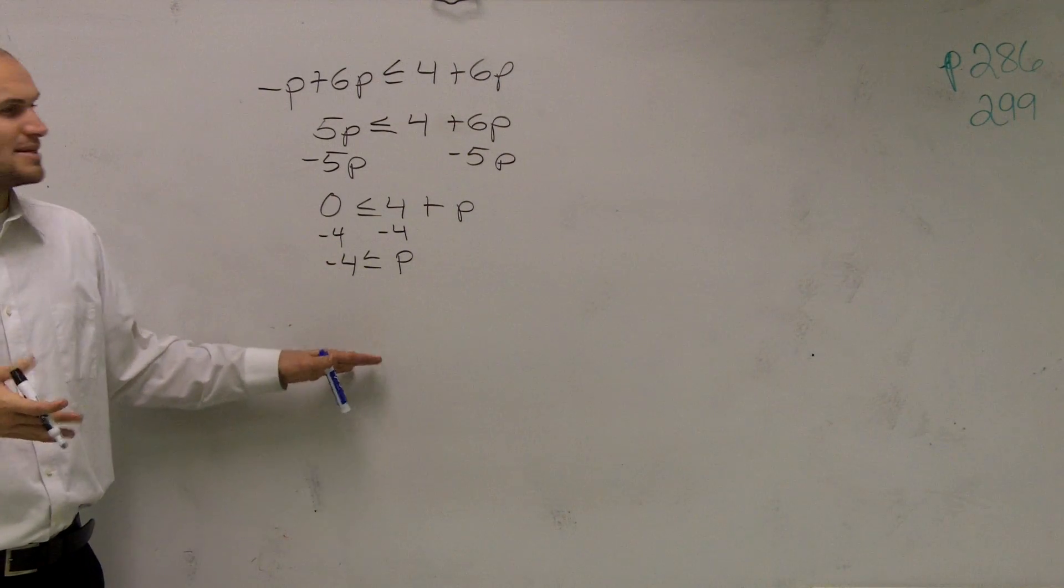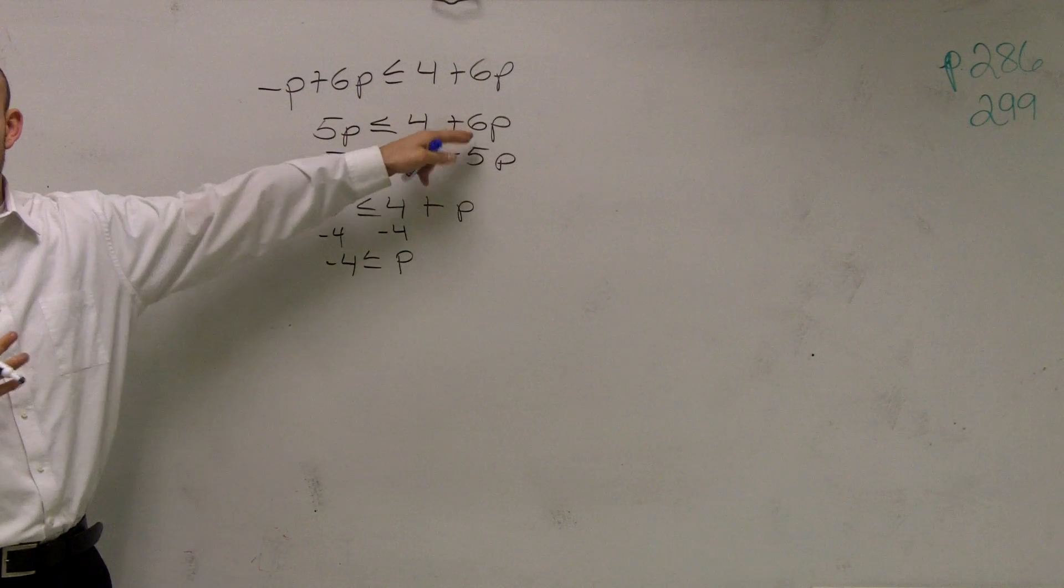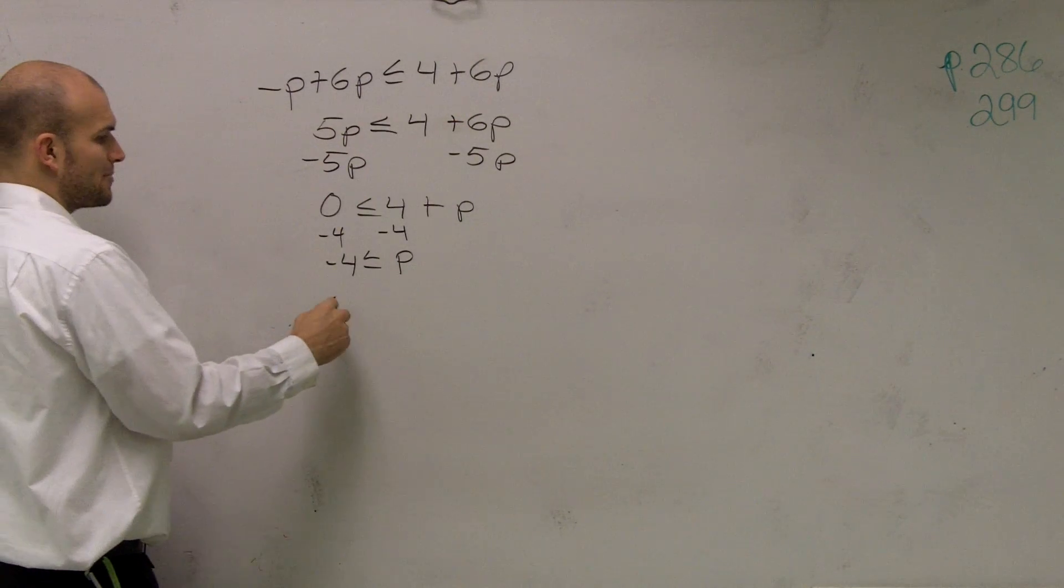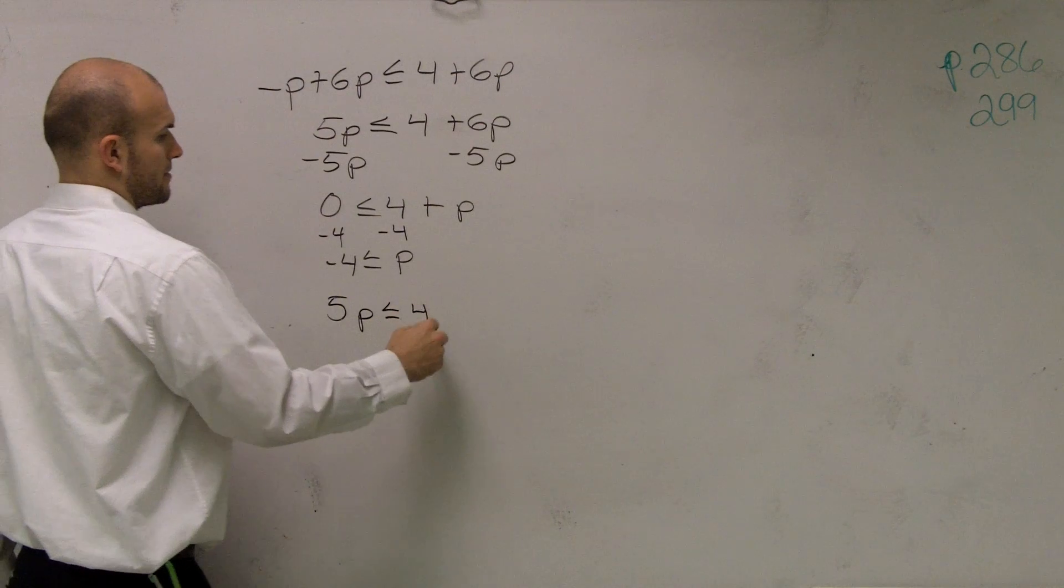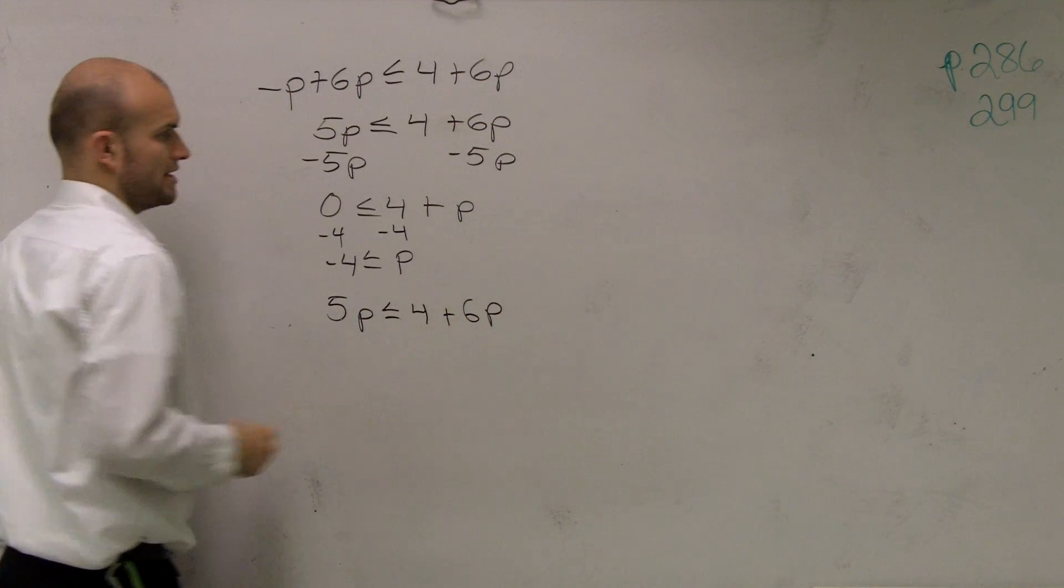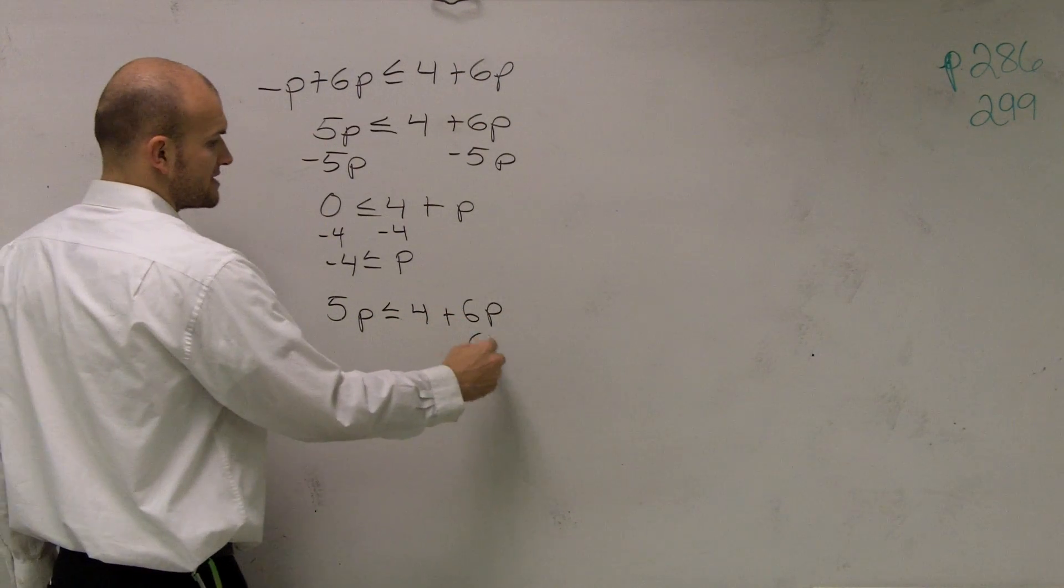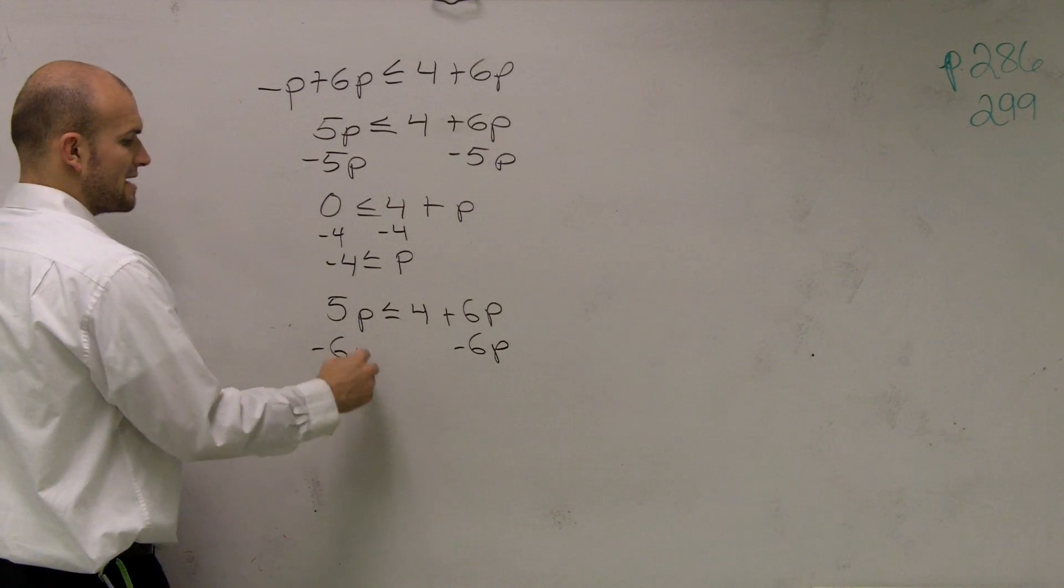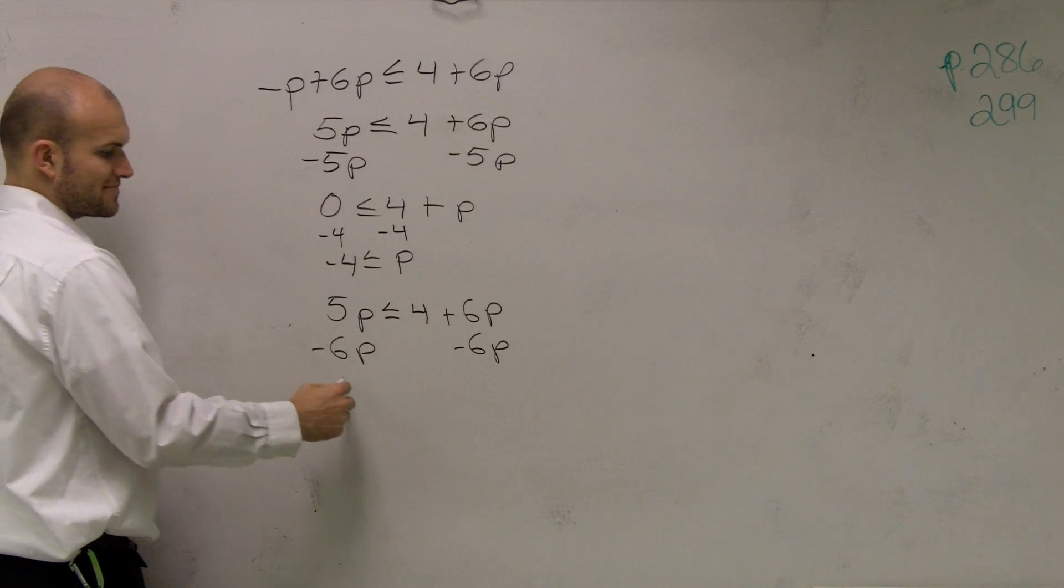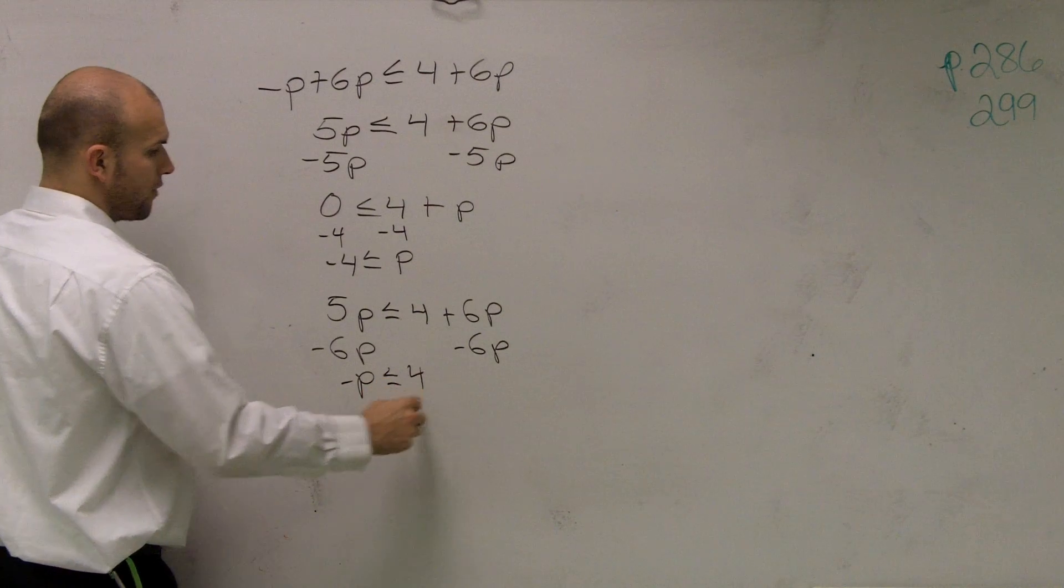Now, some of you might not like that method. You might say, well, what happens if I would have subtracted the 6? Let's do that in a separate way. Let's do this again. So here, if I want to solve it, let's say I subtract the 6p. Let's see, will I get the same answer?